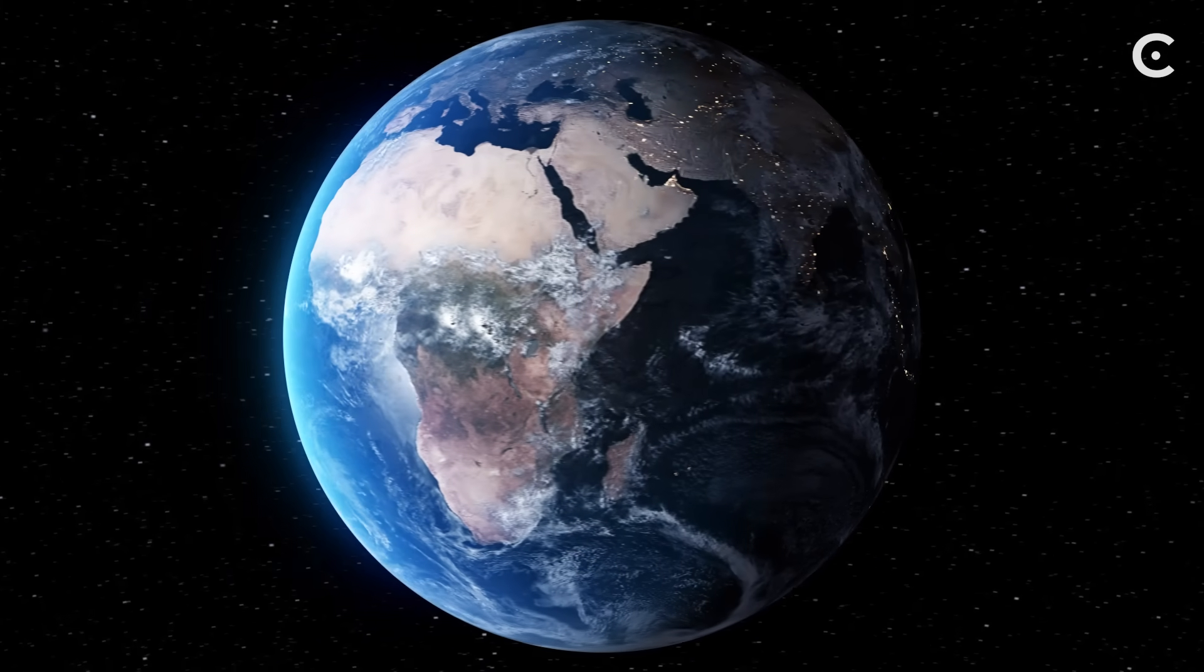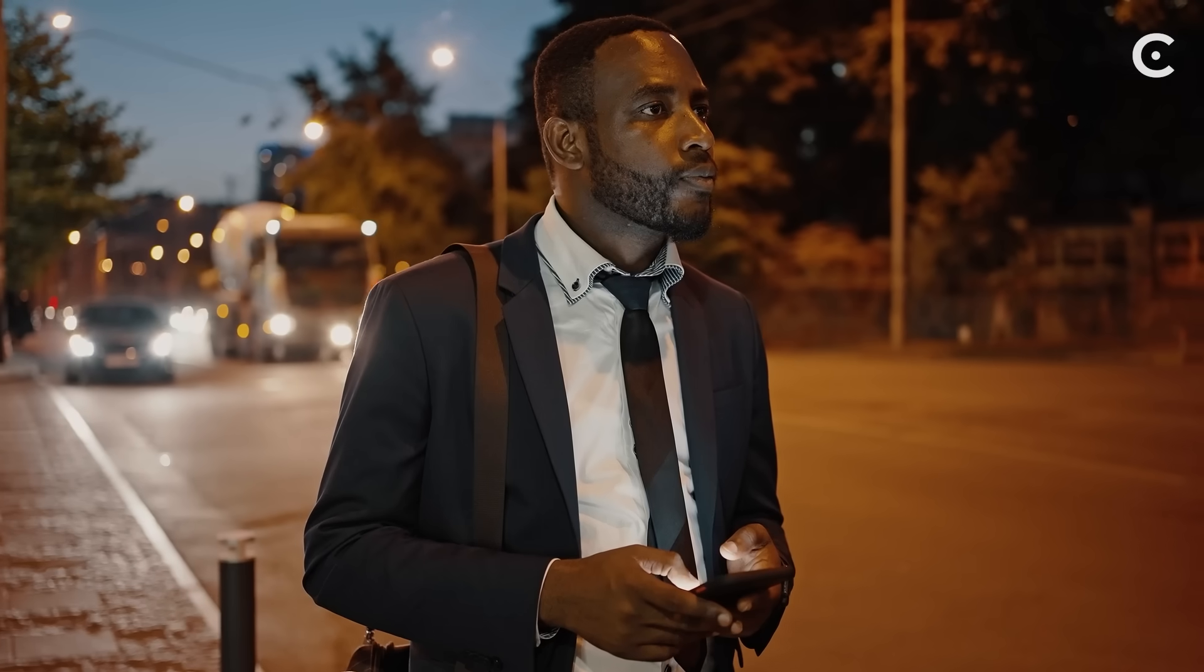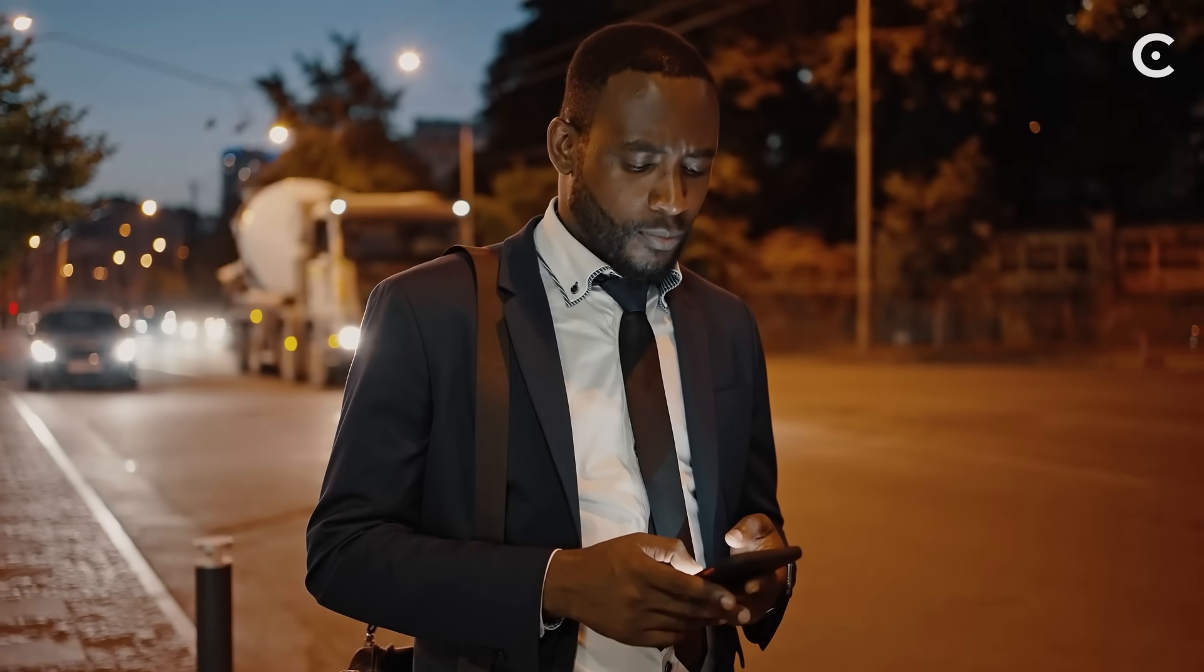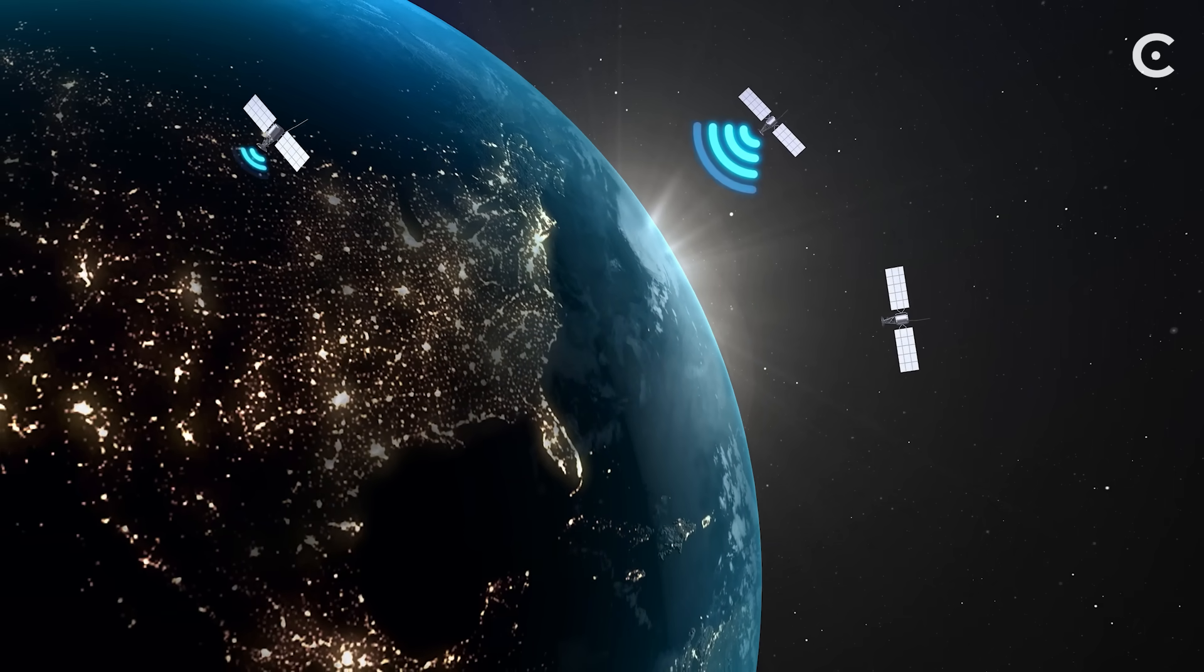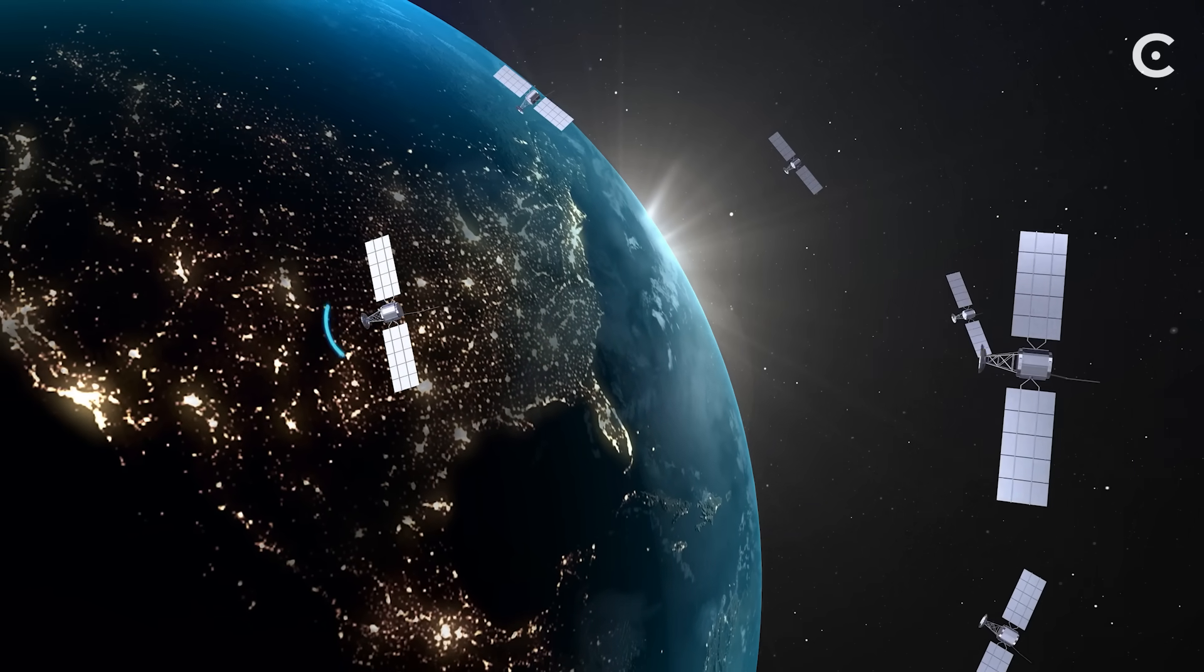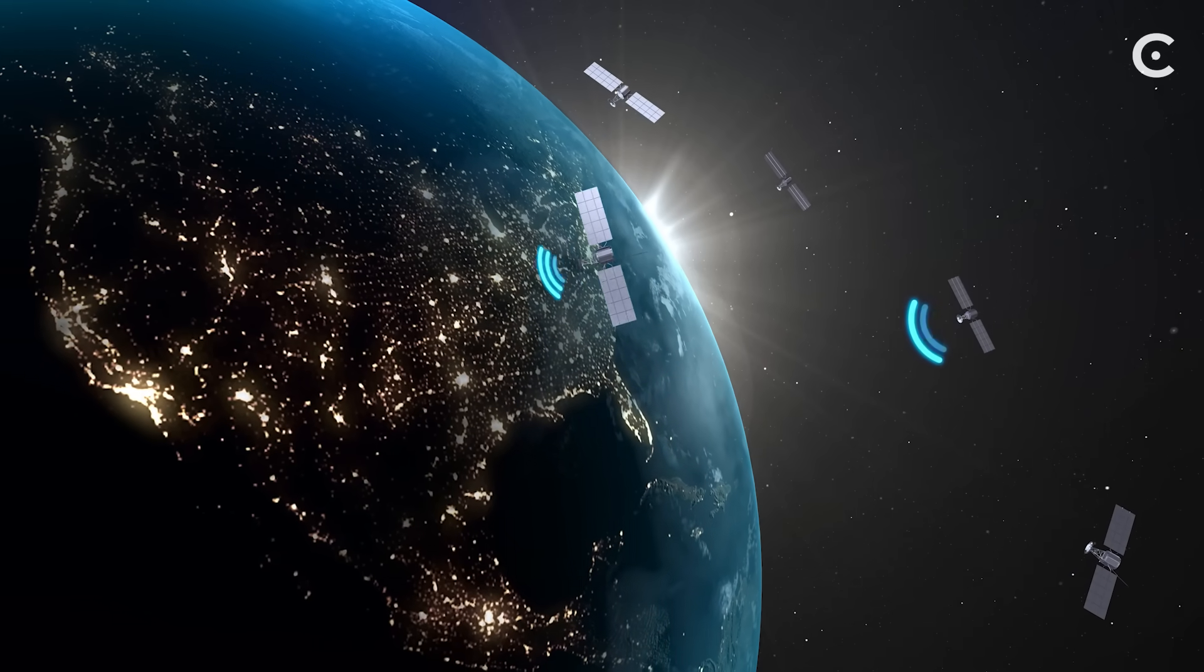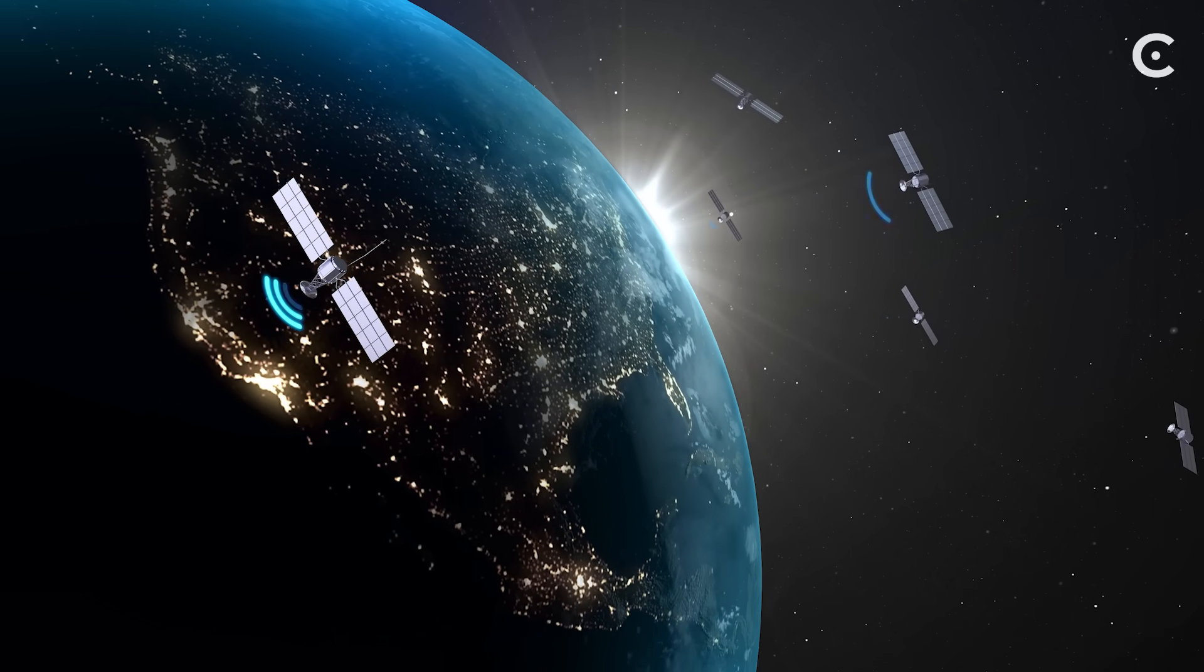Now you might be thinking, this is all fascinating, but does it actually matter for my daily life? The answer is absolutely yes, and your smartphone proves it every day. GPS satellites orbit Earth at about 12,500 miles up, moving at roughly 8,700 miles per hour. At that altitude and speed, relativity kicks in with two competing effects.